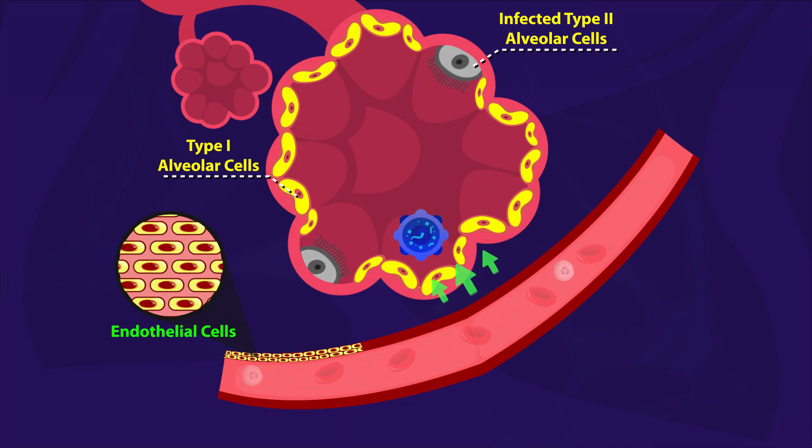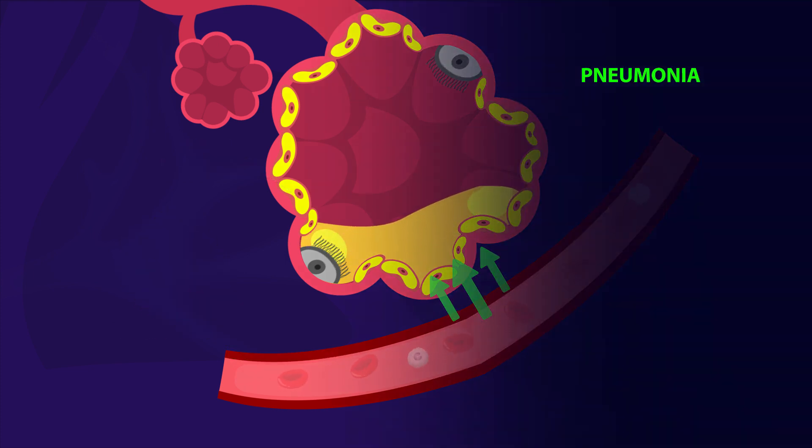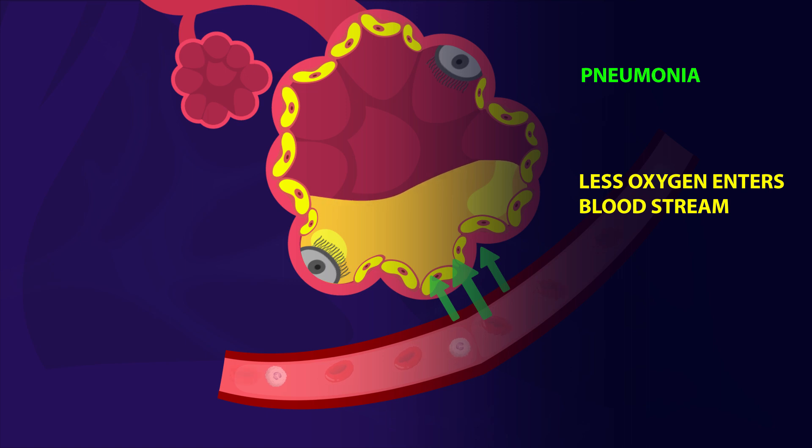As the fluid from the capillaries start accumulating inside the alveoli, it becomes difficult to breathe. This condition is known as pneumonia. The inability to get enough oxygen into the lungs raises the risk for developing hypoxemia, where the blood oxygen level drops.